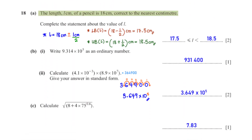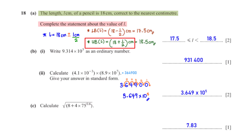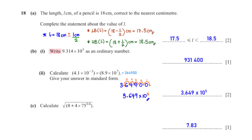The length L cm of a pencil is 18 cm correct to the nearest centimetre. Complete the statement about the value of L. Since we are correcting to the nearest centimetre, the error is ±0.5 cm. The lower bound of L is 18 − 0.5 = 17.5 cm, and the upper bound of L is 18 + 0.5 = 18.5 cm.